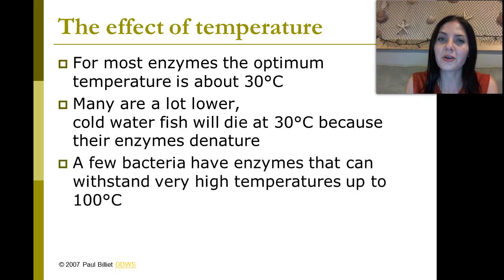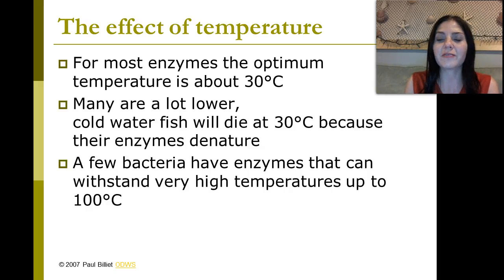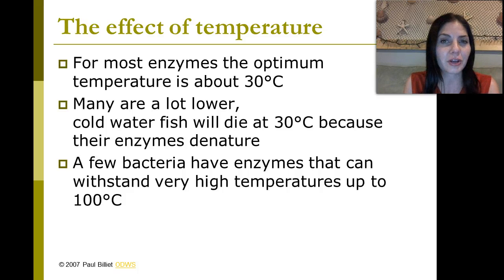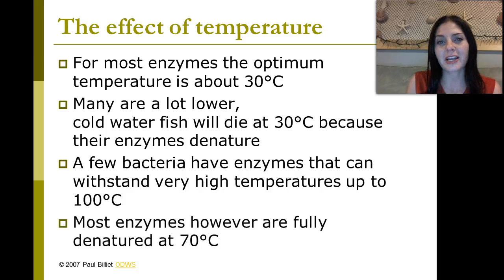There are also other extremes of high temperature. There are bacteria that have enzymes that can withstand very high temperatures of up to 100 degrees Celsius, which is the boiling point. These bacteria can be found in geysers, like at Yosemite, and also hydrothermal vents found really deep in the ocean at divergent boundaries. Most enzymes, however, are fully denatured at 70 degrees Celsius.